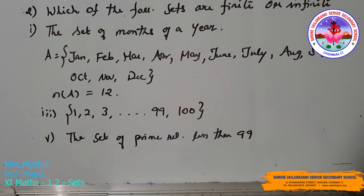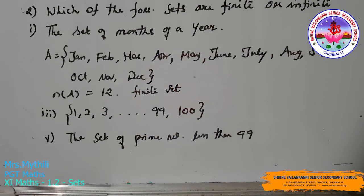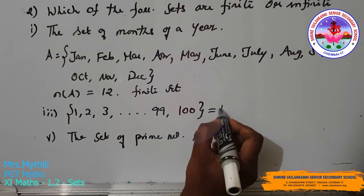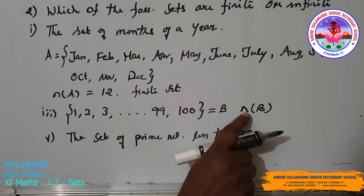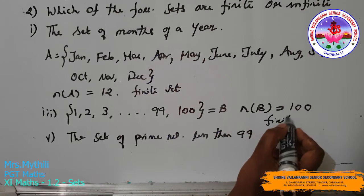Let's see question 2 from Exercise 1.2: which of the following sets are finite or infinite? First: the set of months of a year. There are 12 months, from January to December, so n(A) equals 12, which is countable and therefore a finite set. Third: the set {1, 2, 3, ..., 100}. The number of elements n(B) equals 100, which is countable and a finite set.